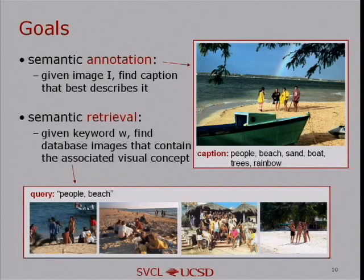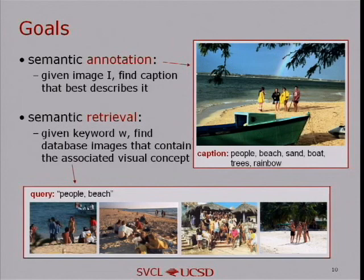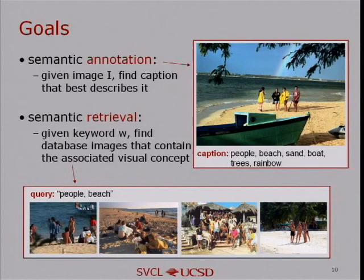The main goal is to learn the mapping between visual features and keywords, to solve two problems. The first is semantic annotation: given a new image, extract features and find the best caption — ideally labeling a beach image with words like people, beach, sand, boats, trees, and rainbow. The second is semantic retrieval: once we know how to annotate images, support retrieval by matching keywords. If I want images with people on a beach, the system finds images containing those visual concepts.